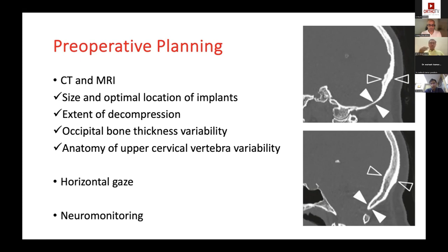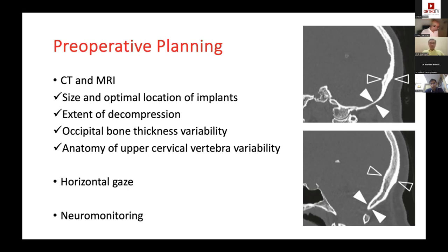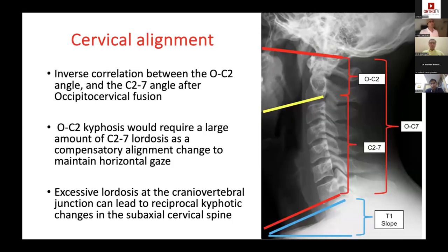Cervical alignment is critical. We assess the correlation between the occiput-C2 and the C2-C3 subaxial spine. Occiput-C2 kyphosis requires a large amount of lordosis as compensatory alignment, and excessive lordosis at the craniovertebral junction can lead to reciprocal kyphosis. Understanding this comes with experience when you see and position the patient in surgery.